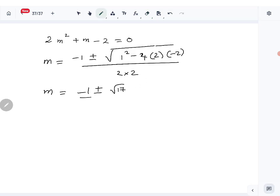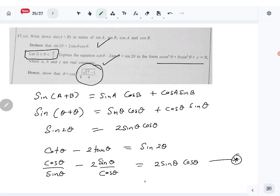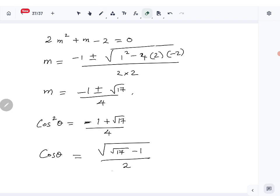So we get m equals minus 1 plus or minus square root 17 over 4. Just replace m now. Cos square theta is positive, so we can drop the negative answer from this one. So the only answer for cos square theta would be minus 1 plus square root 17 over 4. Then find cos theta. So that is going to be square root of 17 minus 1 over 2.